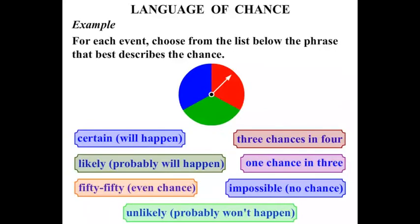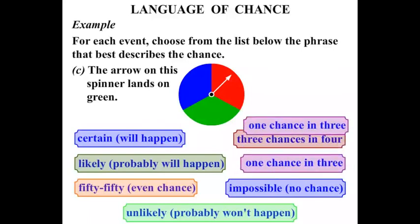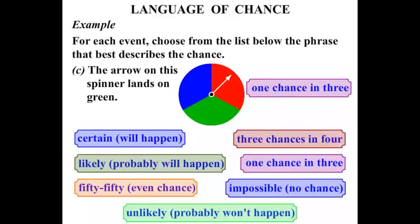Now we've got an arrow here. And there are three colors it might land on. It could land on red, green or blue. And it looks like they are all equally likely. So if I ask you what's the chance that the arrow on the spinner lands on green? Well it's got one chance in three.